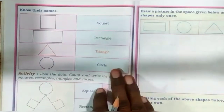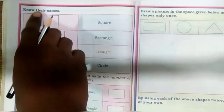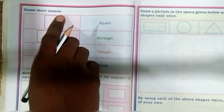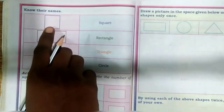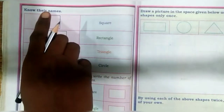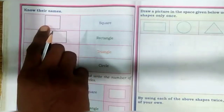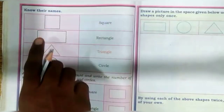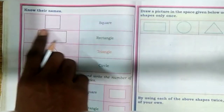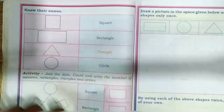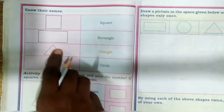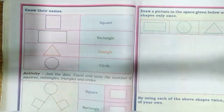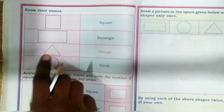Already you know their shapes and names. First one: square. Next one: rectangle. Next one: triangle.